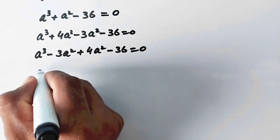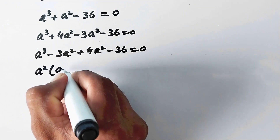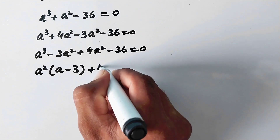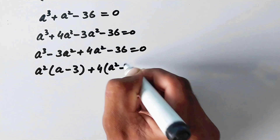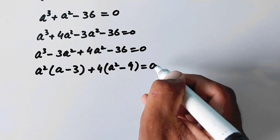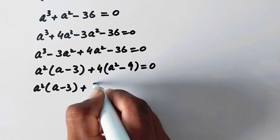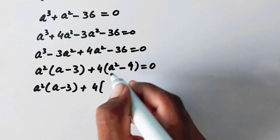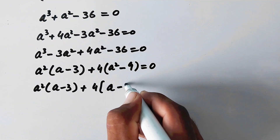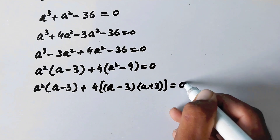Here we take a squared common from the first two terms, giving a squared times (a minus 3), plus 4 is common from the last two terms, leaving a squared minus 9 equal to 0. Since 9 is the square of 3, we can write that as (a minus 3)(a plus 3), so we have a squared times (a minus 3) plus 4 times (a minus 3)(a plus 3) equal to 0.